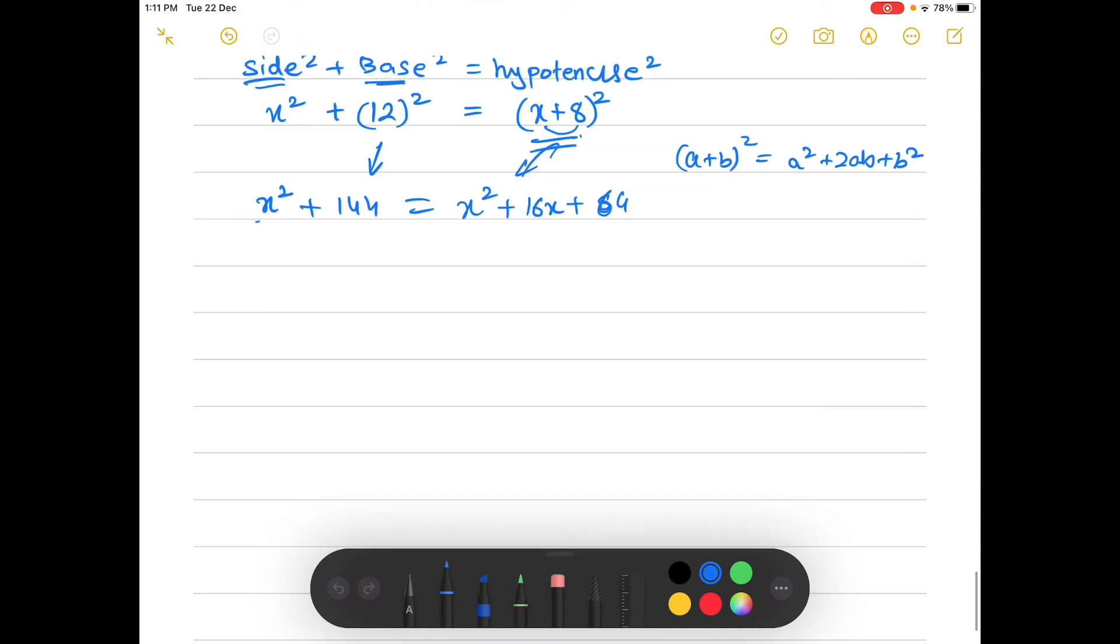Now here is also x squared and here is also x squared, so we can directly cancel them out. So we are left with 16x plus 64 is equal to 144. When we take it to the other side, we are remained with 16x is equal to 144 minus 64.